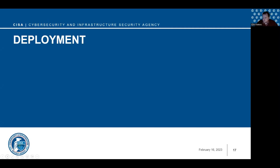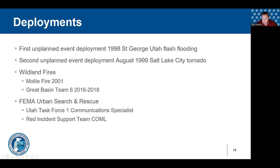Now I'll talk about deployment. My first unplanned event deployment was in 1998 for some flash flooding in St. George, Utah. I sat at the National Weather Service office in Salt Lake City with an HF operator who communicated over HF radio to stations in St. George taking damage reports. I relayed that information over two-meter repeater to interested parties at the Utah Capitol building and the emergency operations center. Our shift was an overnight shift — I worked entirely on amateur radio.